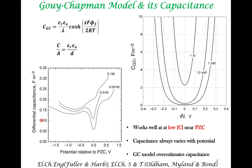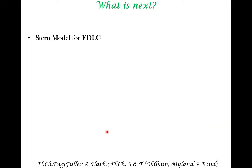This model can be improved by a more elaborate model called the Stern model, which came after the Gouy-Chapman model. We will look at that in the next lecture.